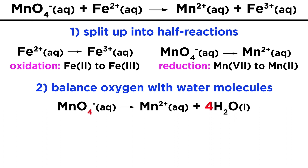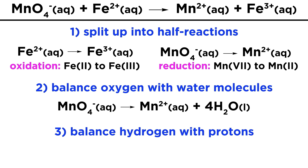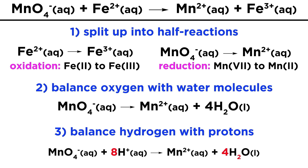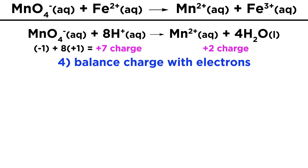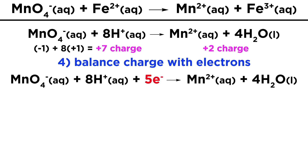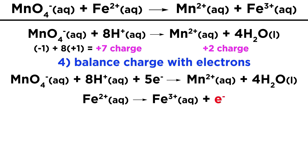Those oxygens had to go somewhere, and in fact they become water molecules. So let's take the reduction half-reaction and first add 4 water molecules on the right side. Now we have 4 oxygen atoms on each side and oxygen is balanced. But in doing so we have added 8 hydrogen atoms to the right, so we have to add 8 hydrogen ions on the left. Now all the elements are balanced. On the left we have 1 minus from the permanganate ion and 8 protons for a total of plus 7 charge on the left. On the right we have just the +2 on the manganese ion. That means we need 5 electrons on the left side, because +7 plus −5 equals +2. Now the reduction half-reaction is totally balanced.